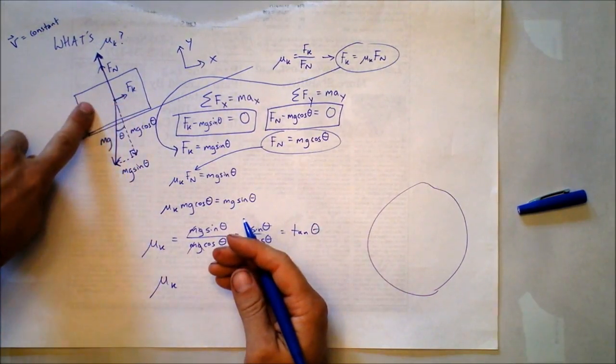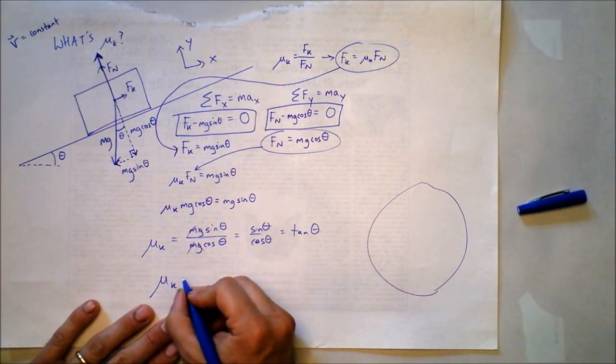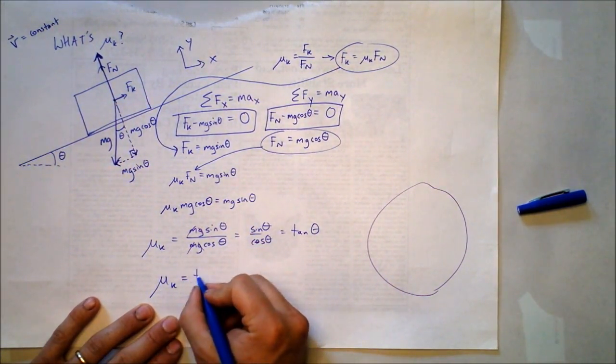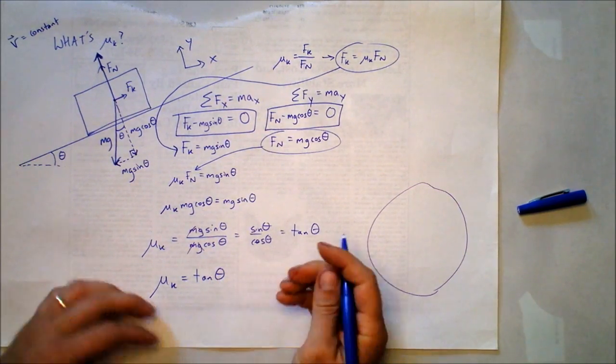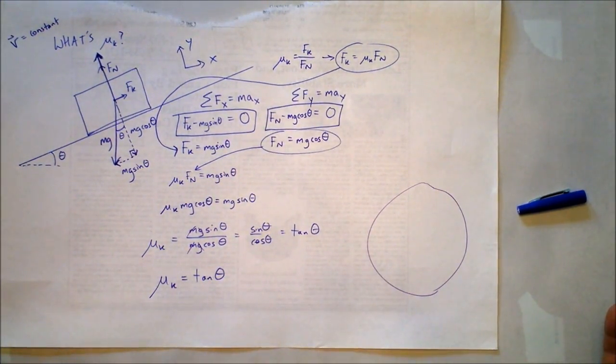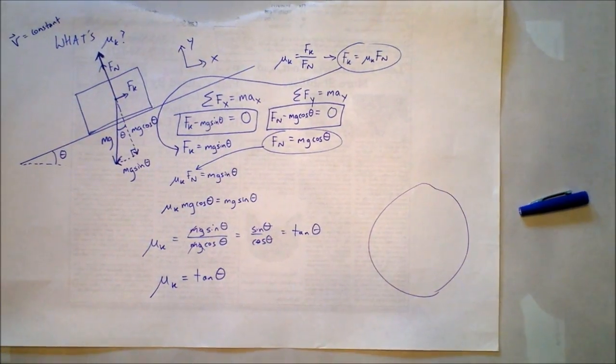And we've found that if a box is sliding with no acceleration, then the coefficient of friction must be the tangent of the angle of the ramp. Dang! Look at that!